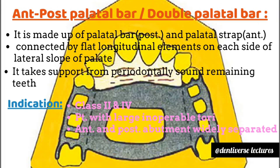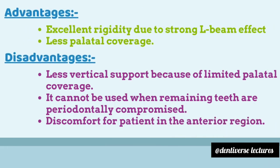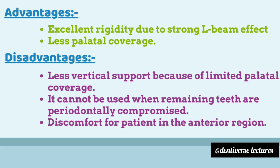Third is the anterior-posterior palatal bar or double palatal bar. It is made up of a palatal bar posteriorly and a palatal strap anteriorly, connected by flat longitudinal elements on each side of the lateral slope of the palate. It takes support from periodontally sound remaining teeth. Indications are class 2 and class 4, patients with large inoperable mid-palatal maxillary tori, and cases where anterior and posterior abutments are widely separated. Advantages include excellent rigidity due to a strong L-beam effect and less palatal coverage. Disadvantages include less vertical support because of limited palatal coverage, it cannot be used when remaining teeth are periodontally compromised, and discomfort for the patient in the anterior region.